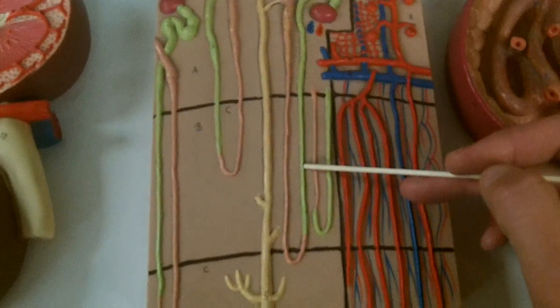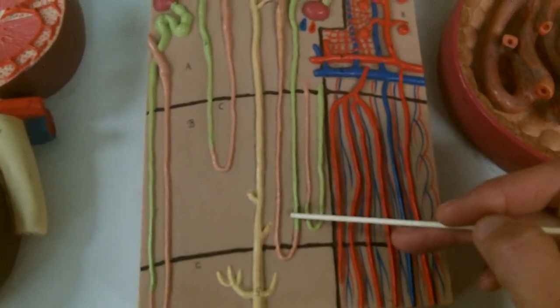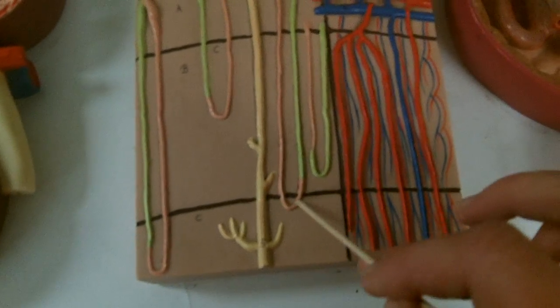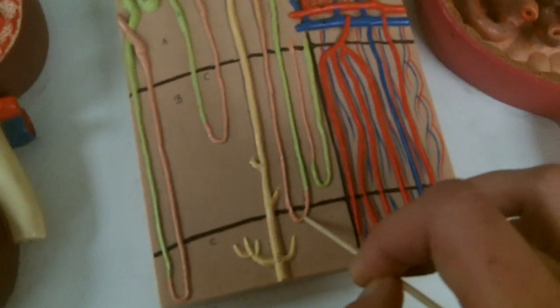We have the descending limb of the loop of Henle or nephron loop. We have the hairpin turn and the filtrate at this point is as maximally hyperosmotic as possible.